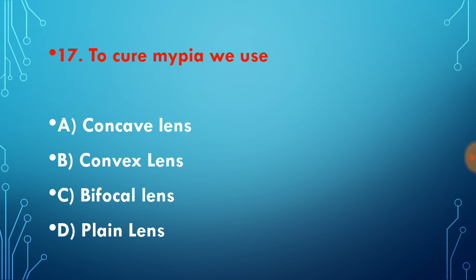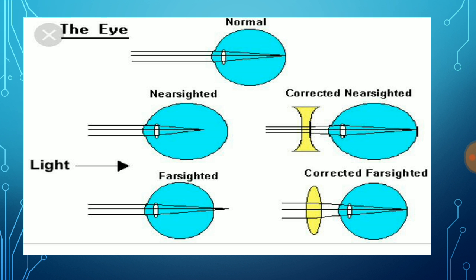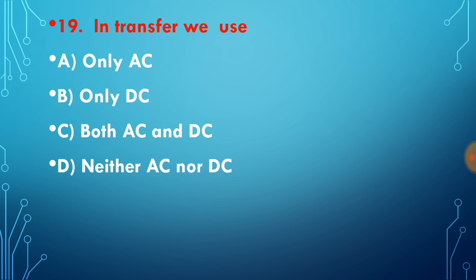To cure myopia, we use concave lens, and to cure hypermetropia, we use convex lens. Let us see this picture: short-sightedness or near-sightedness is cured by concave lens, and long-sightedness or hypermetropia is cured by convex lens. These are the shapes of concave and convex lens.